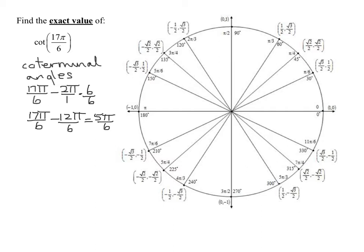And is 5π over 6 on my unit circle? Yes, it's right here. So remember, the trig functions of coterminal angles are equal. So I know that the cotangent of 17π over 6 is equal to the cotangent of 5π over 6. Since they're coterminal angles, all their trig functions are the same. Their cotangents, their tangents, sines, cosines, etc. are all equal.